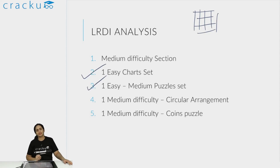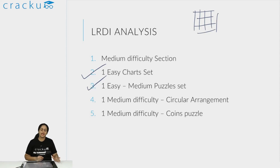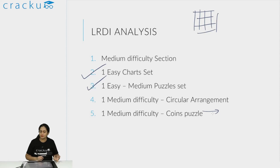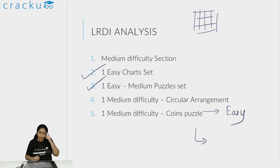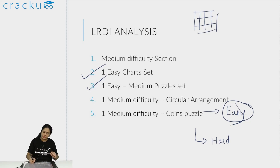Because there are two easy sets, this would be a high-scoring section - this is a slightly easy LRDI section on the whole. The circular arrangement was medium difficulty - exact CAT difficulty level, the kind of arrangement questions you should expect in CAT. The coins puzzle I would say is medium difficulty. If you know how to calculate the winning and losing positions and have a lot of practice, this would be easy. If not, it will take a lot of time to figure out how to solve it, and it is not really easy because each question has to be individually solved and still consumes time.